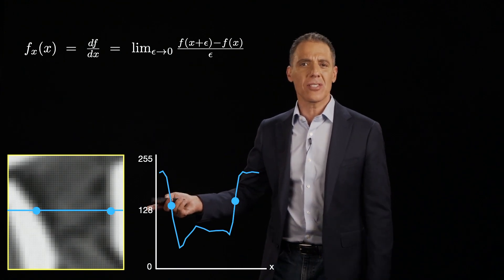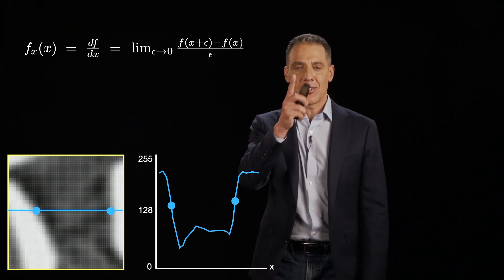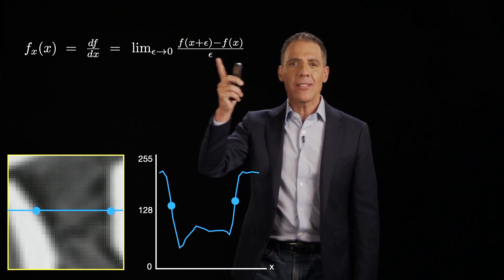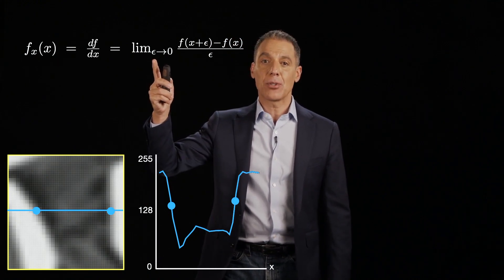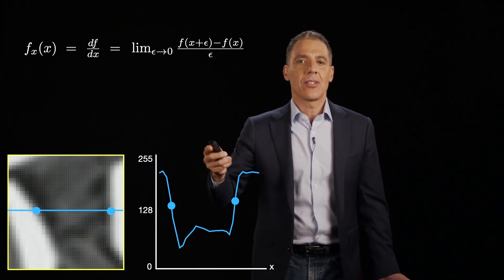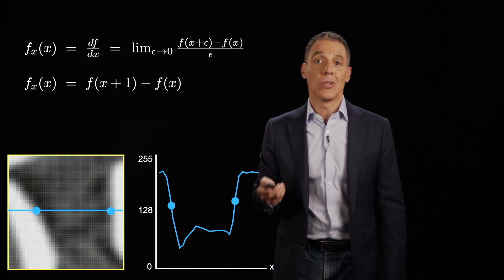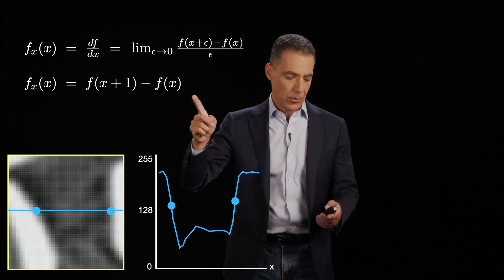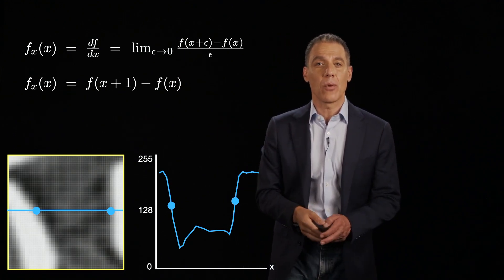That is clearly not the case here, because this is a sampled image. I've drawn it as if it looks like a continuous curve, but it's not — it just has a sample at pixel 1, a sample at pixel 2, and a sample at pixel 3. That's a problem for the derivative definition because we're trying to take a limit as epsilon approaches 0, and that doesn't make sense. At best, we can look at neighboring pixels when epsilon equals 1. So here is a discrete approximation to a derivative.